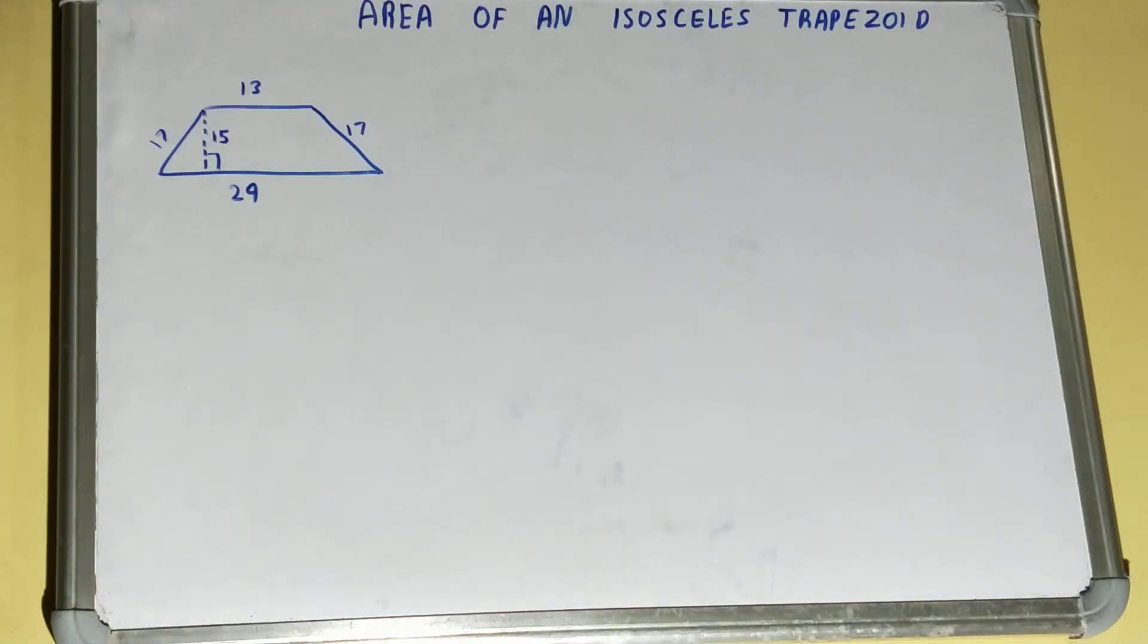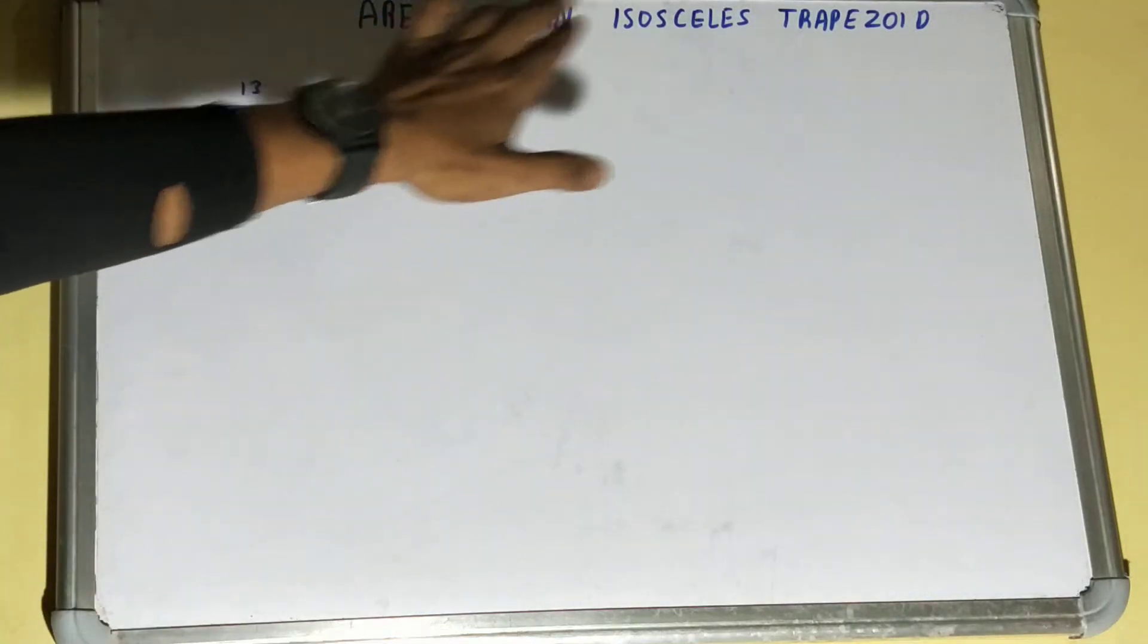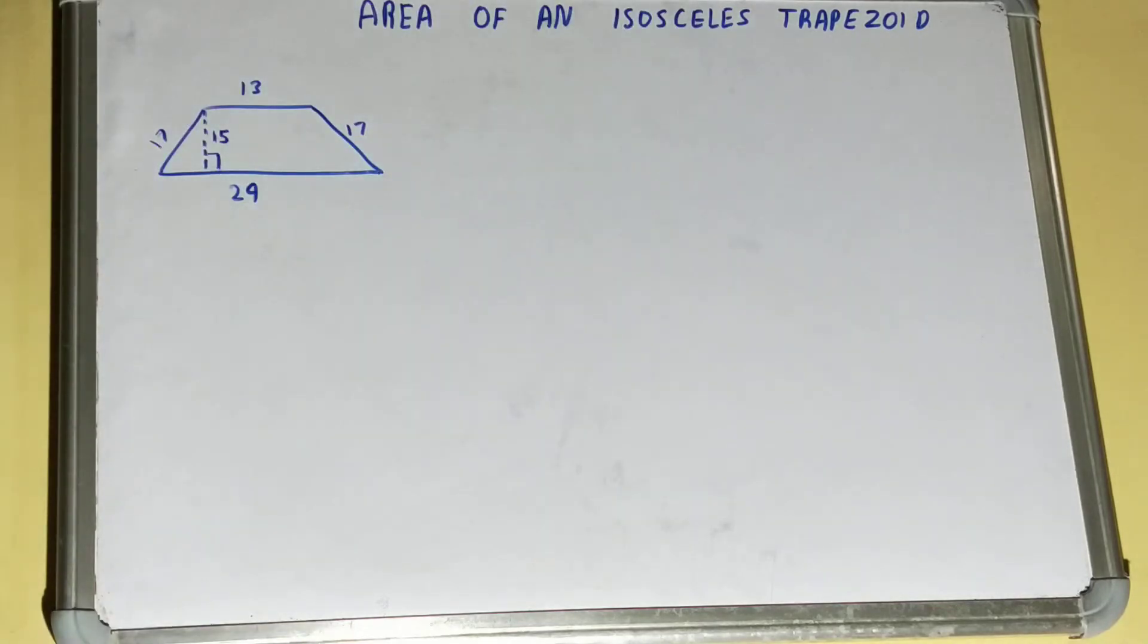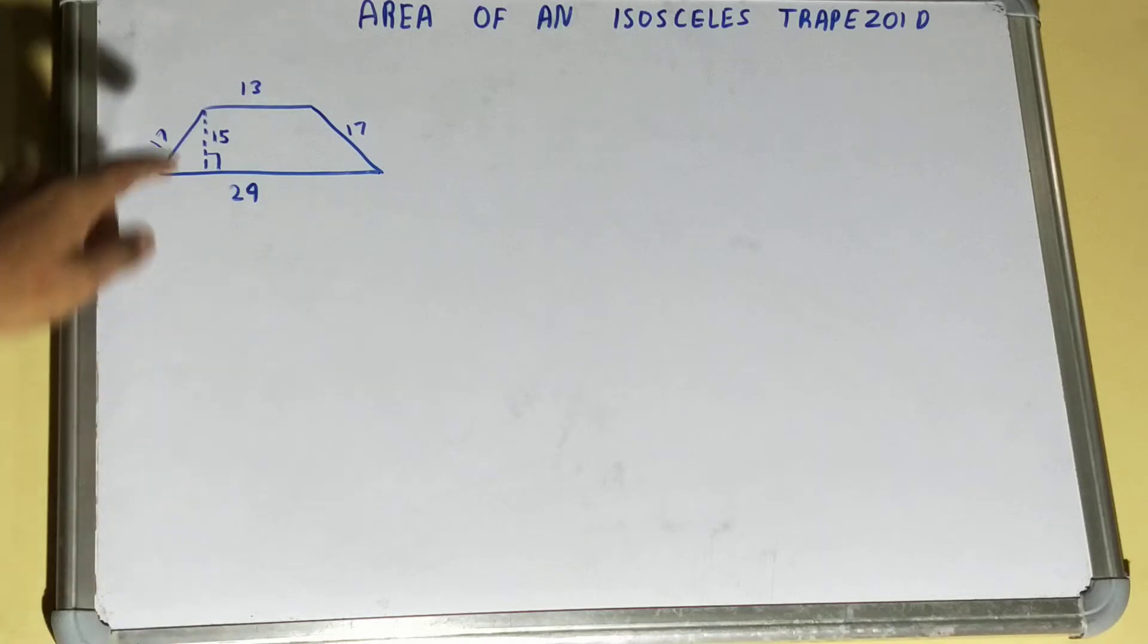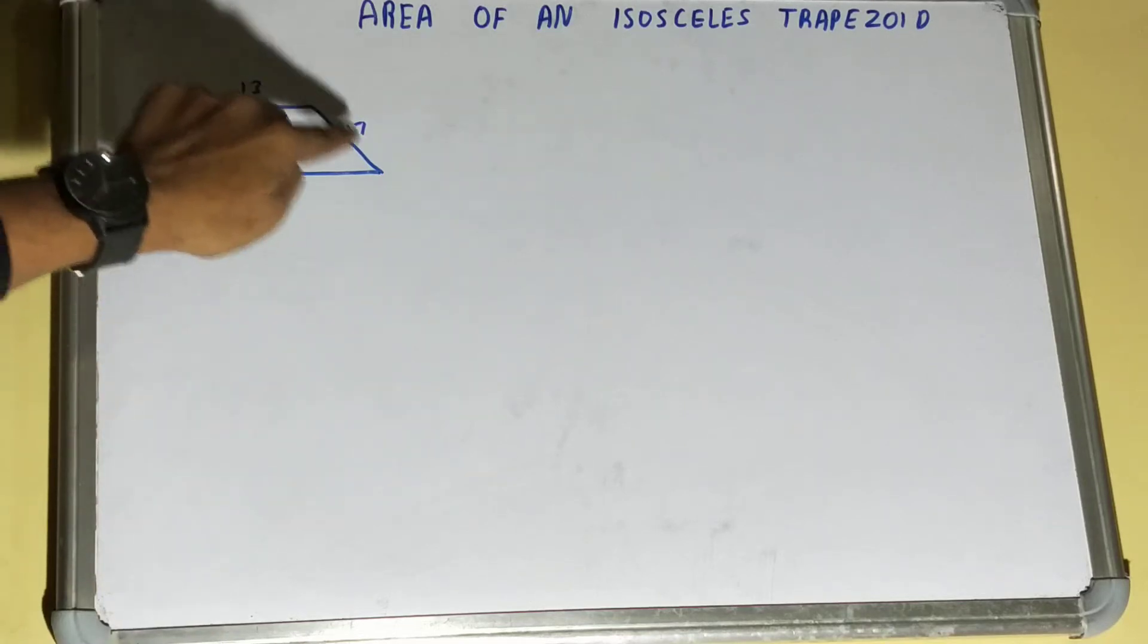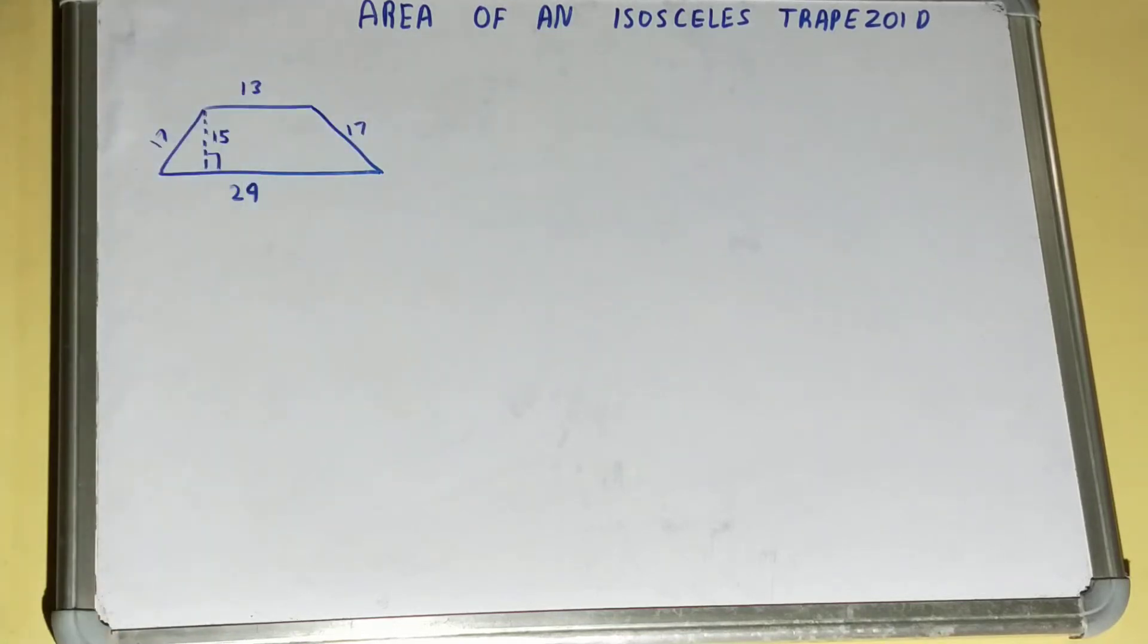Hello friends, in this video we'll be learning how we can find out the area of an isosceles trapezoid. Now an isosceles trapezoid is a trapezoid in which the two slanted sides are equal. You can see this is also 17 and this is also 17.